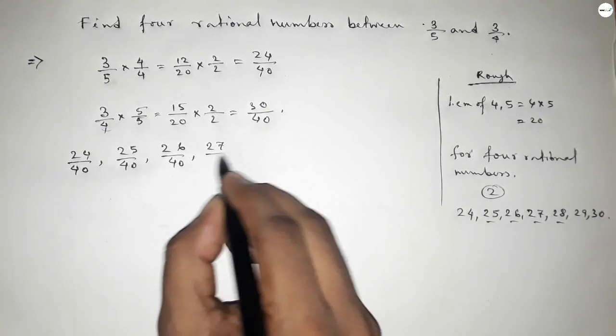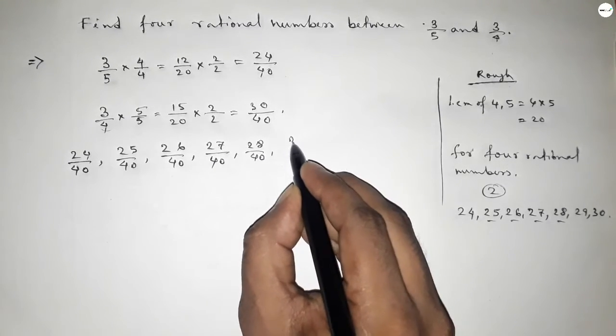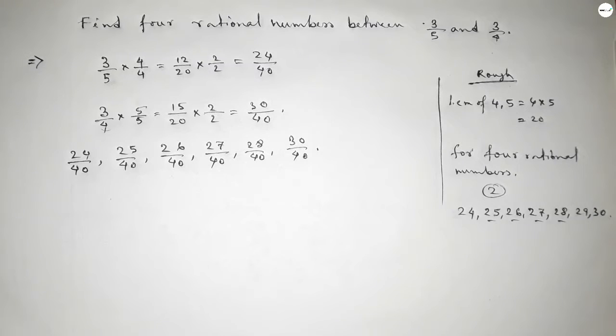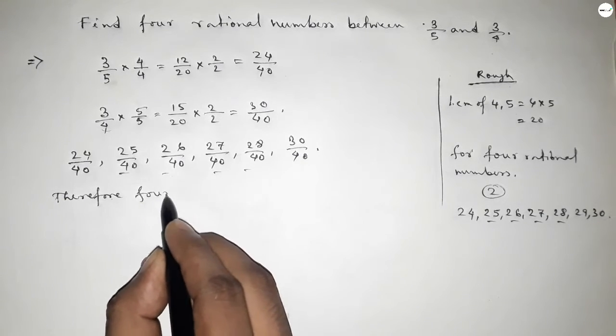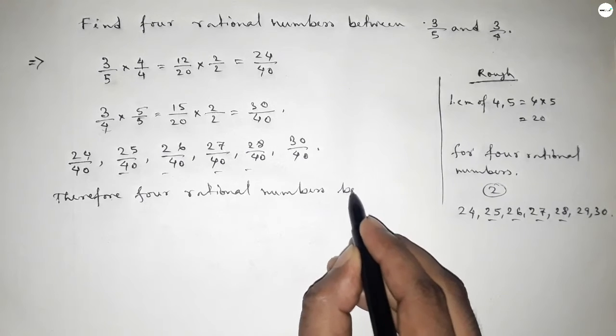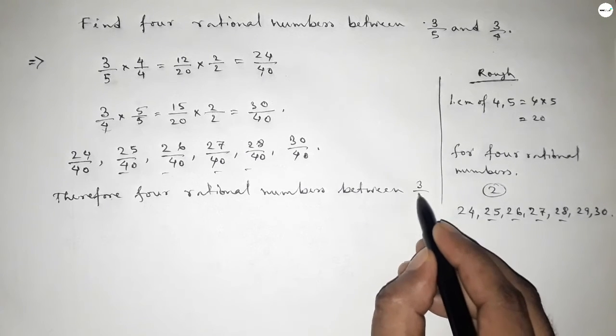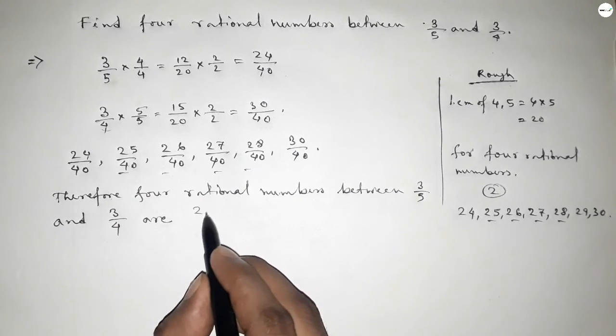So these are the four required rational numbers between 3/5 and 3/4.